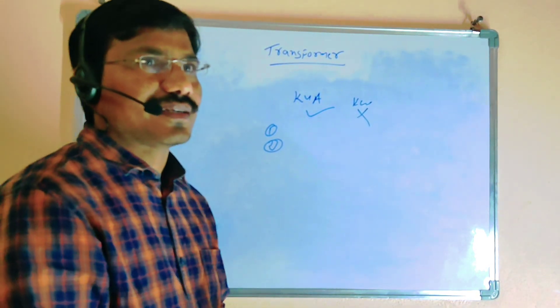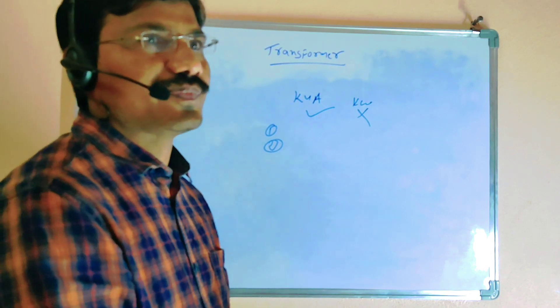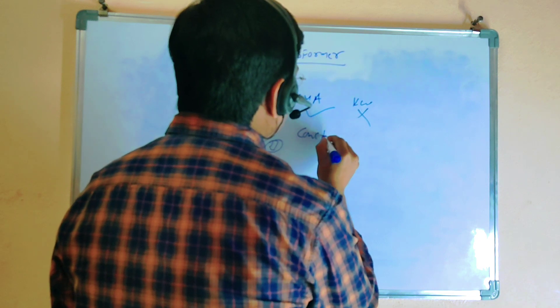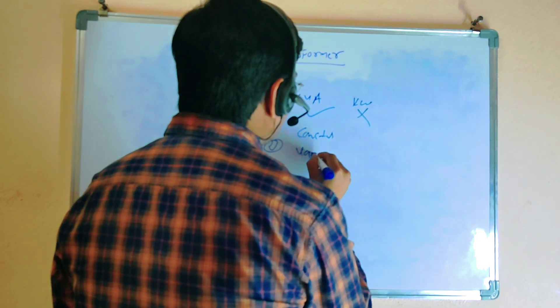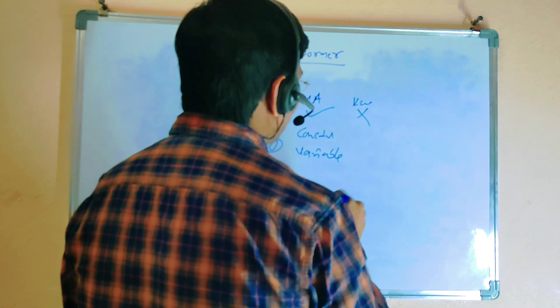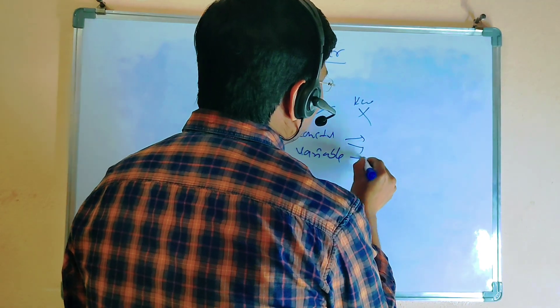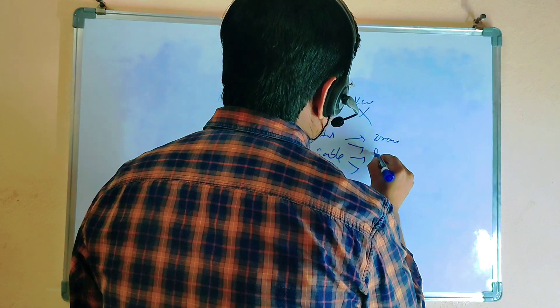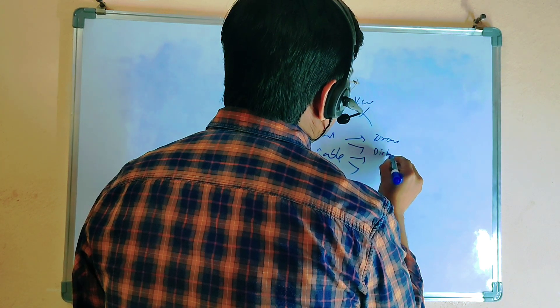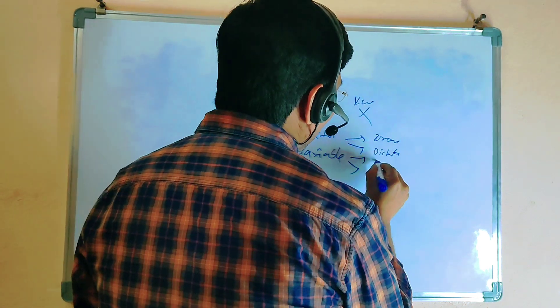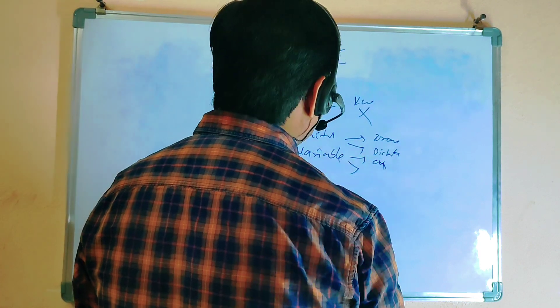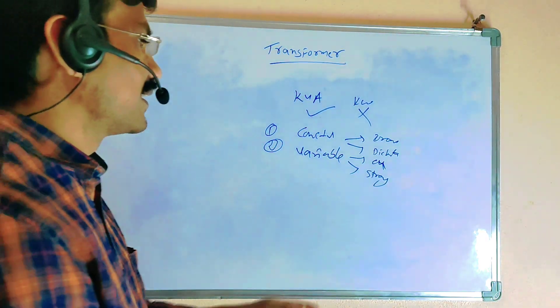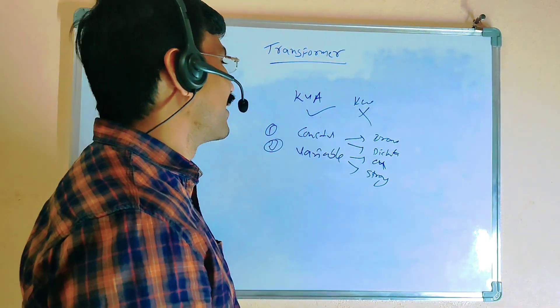Basically, inside the transformer there are two types of losses. One is constant losses, second one is variable losses. The constant losses are iron losses and dielectric losses. The variable losses are copper losses and stray load losses.